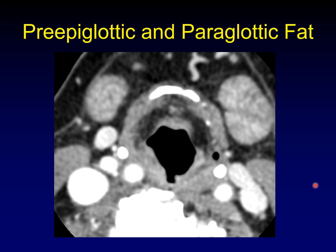Let's focus a little more on the fat planes in the supraglottis. This is the petiole of the epiglottis, and this is the hyoid bone. This U-shaped configuration of fat represents the preepiglottic and the paraglottic fat. The preepiglottic fat is anterior to the petiole of the epiglottis, and the paraglottic fat is laterally on either side. This looks like one continuous plane of fat — there is a fascial plane between these, but it's usually not evident radiologically.